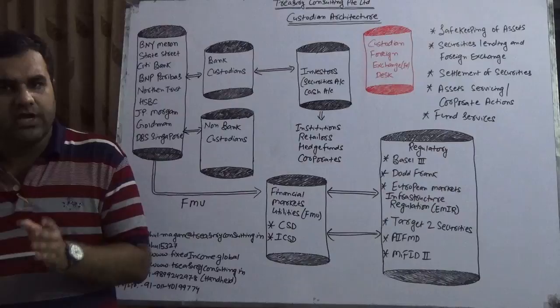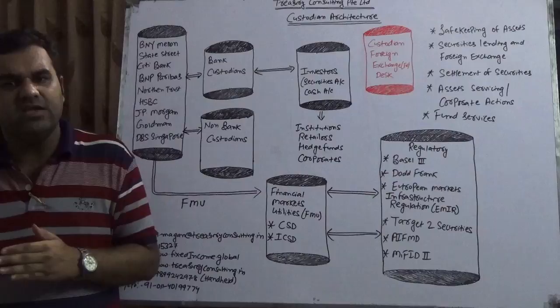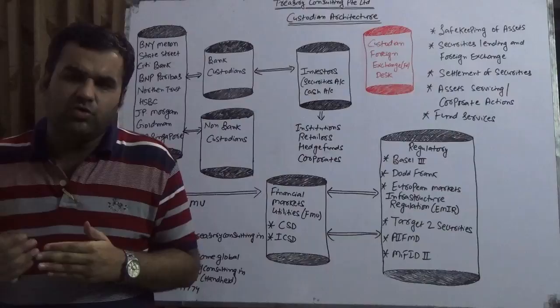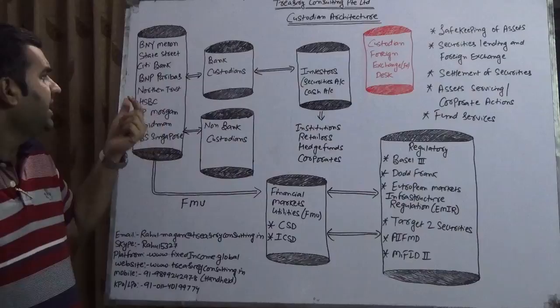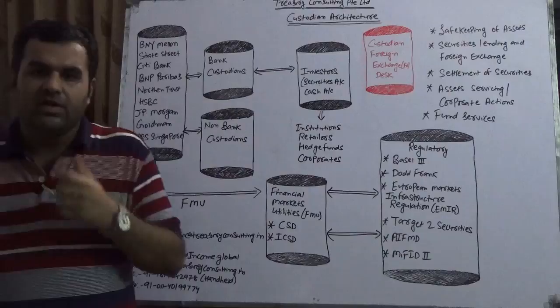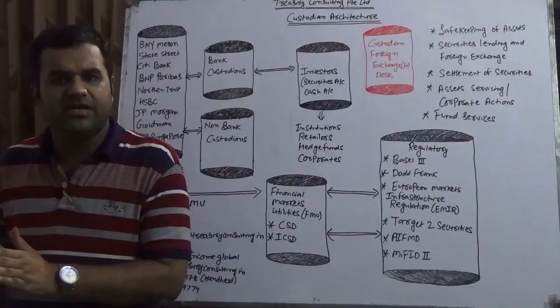When a mutual fund buys security, where is it held? Ultimately, the investor holds it in a custody account with top custodians like BNY Mellon, State Street, Citibank, BNP Paribas, Northern Trust, HSBC, and all. They maintain two kinds of relationships: a security account and a cash account.